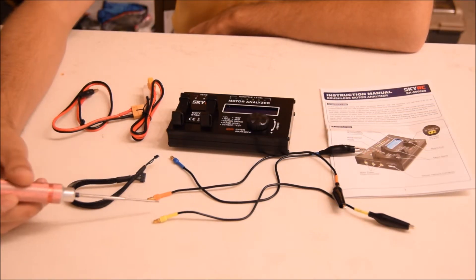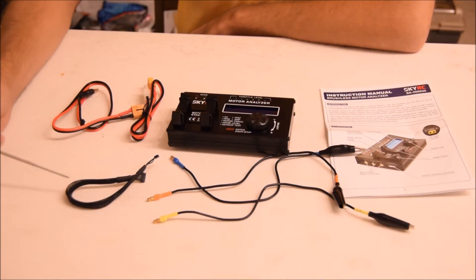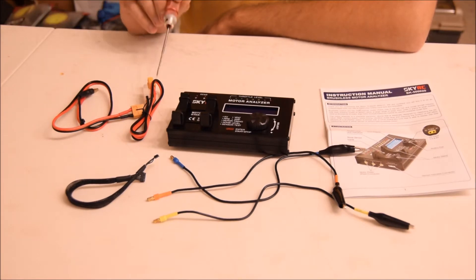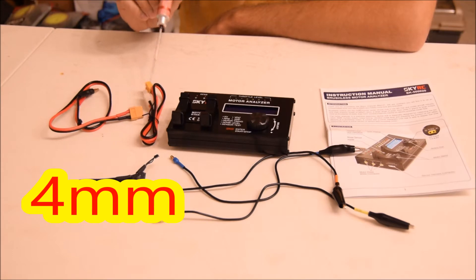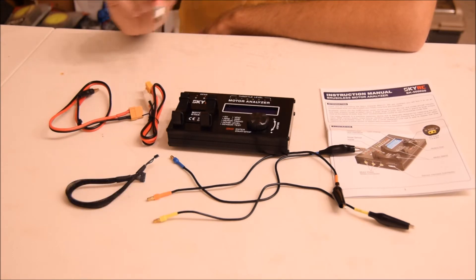In the box you get three wires to hook up the motor, a sensor wire, and two plugs for the battery: a bullet connector and a Tamiya. The analyzer itself comes with XT60.